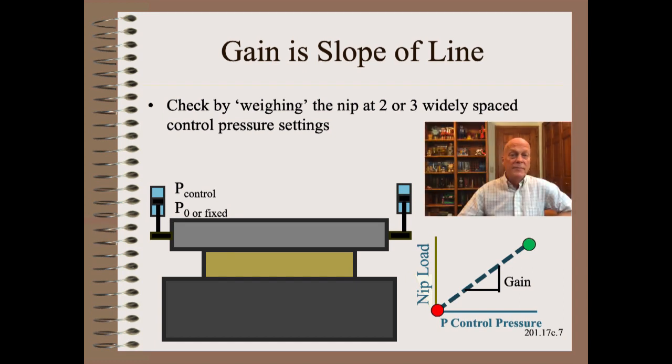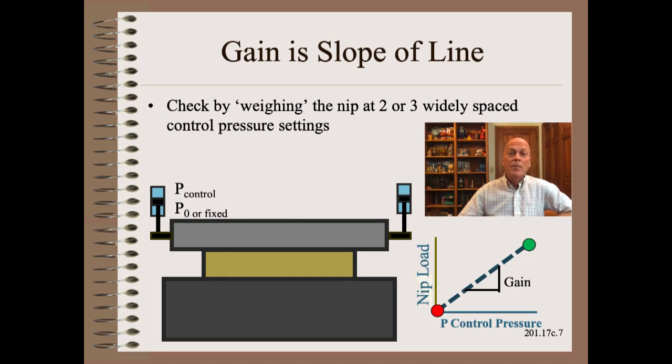Gain is simply the slope of the nip load versus control pressure line. To check our work, we simply weigh the nip at two or three widely spaced control pressure settings. What could be simpler?